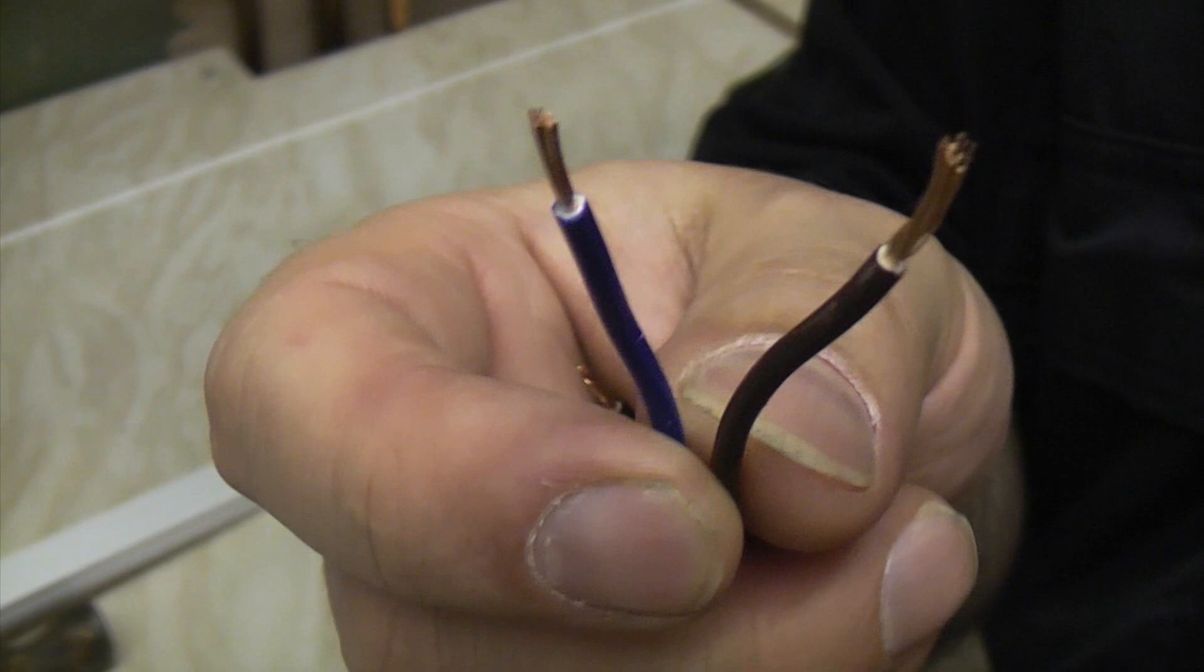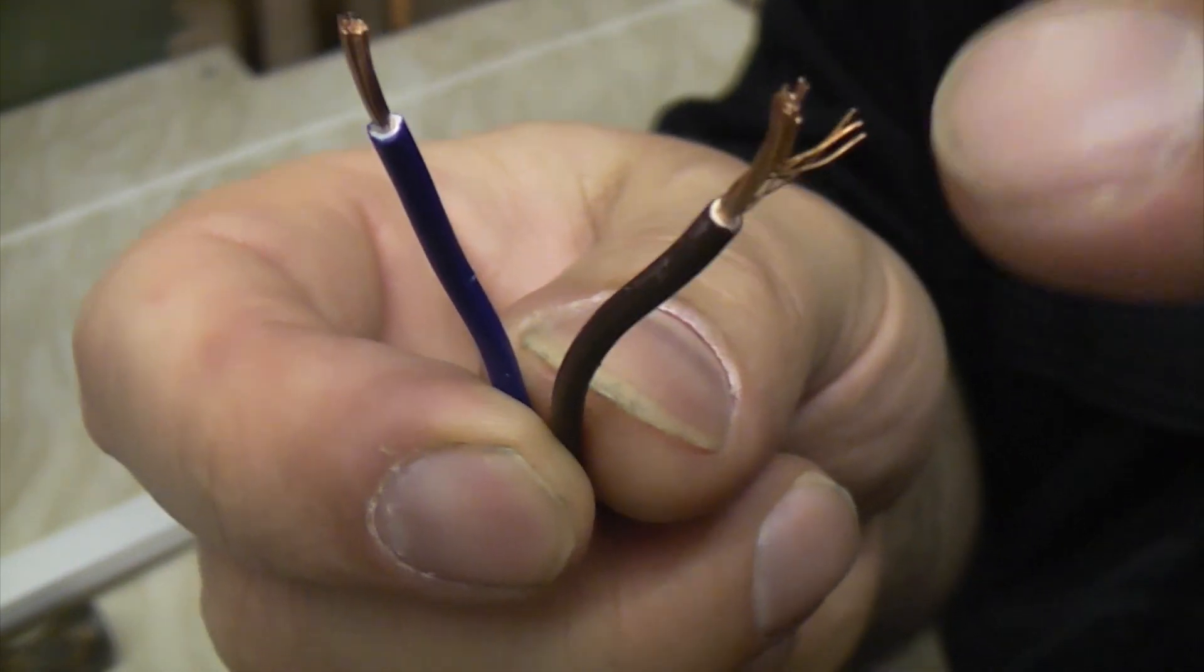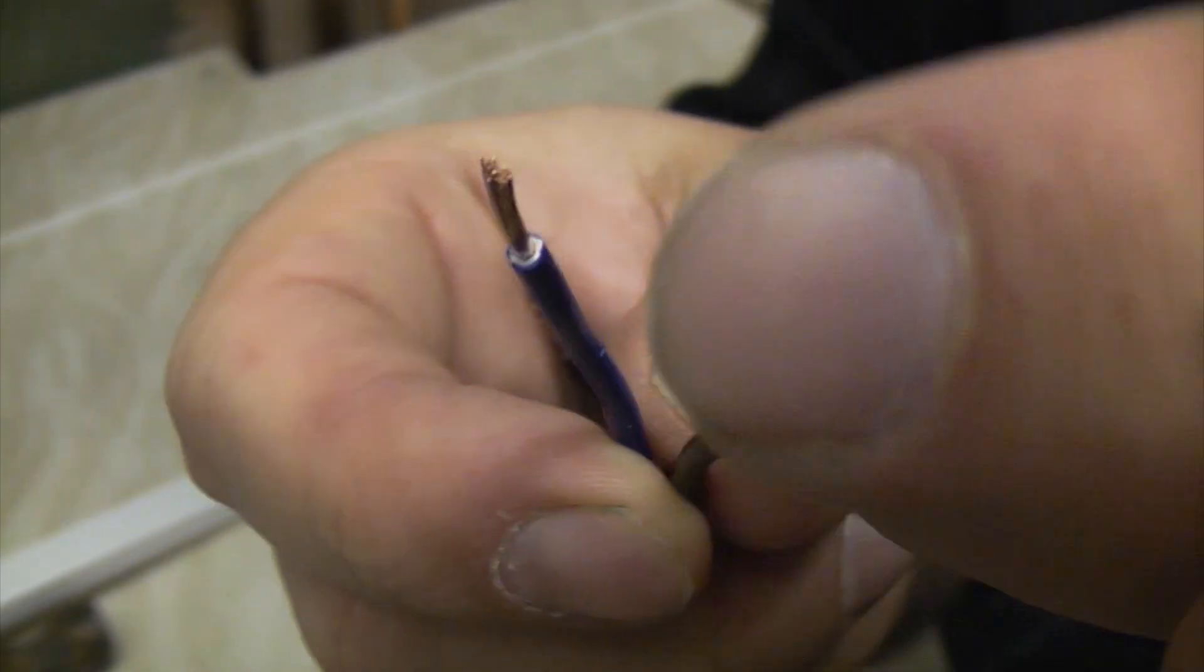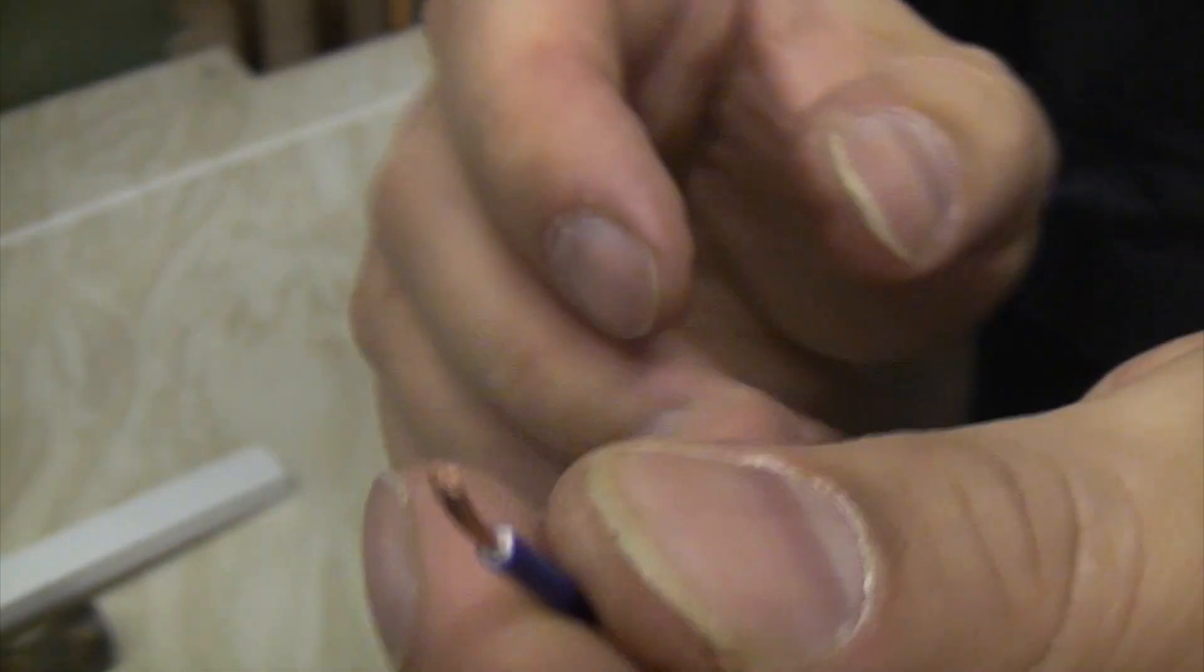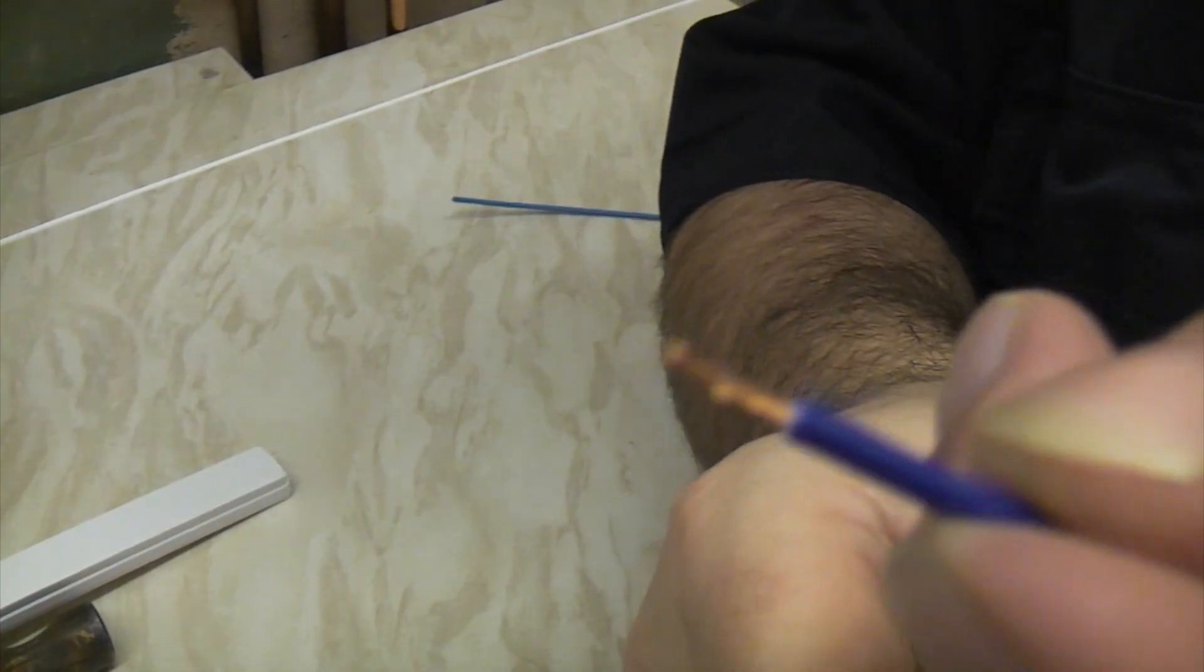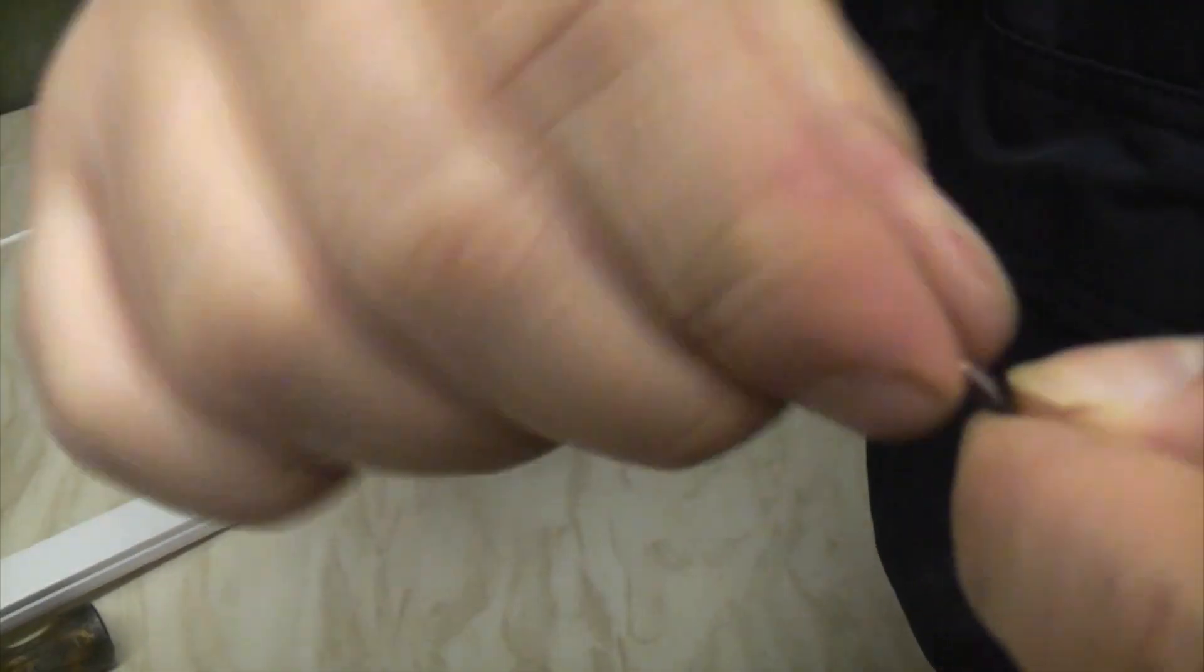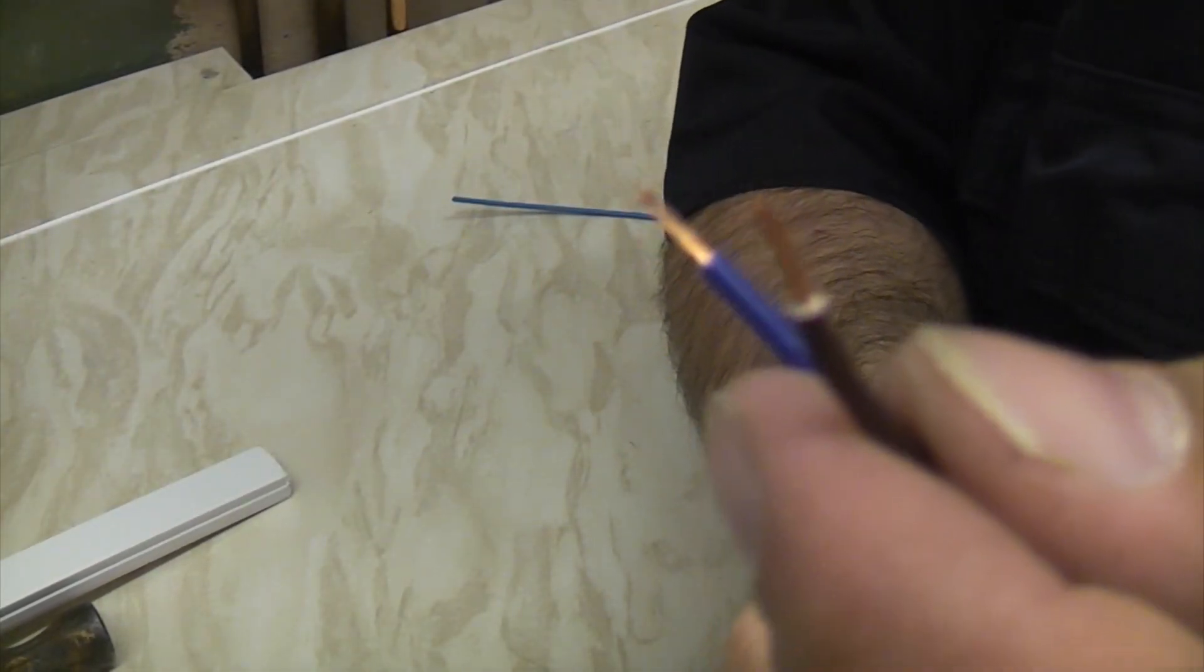The big problem when you are trying to terminate flexible wire is that the strands separate when you are pushing it into the terminals. So for that reason, it is a good idea to twist them together, and then it is a good idea to tin them with a bit of solder. So I have twisted that together; I am just going to do the same with that one.